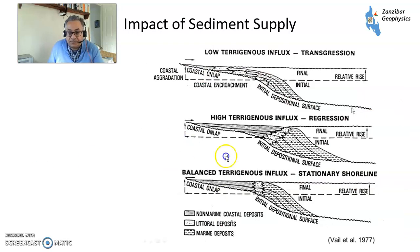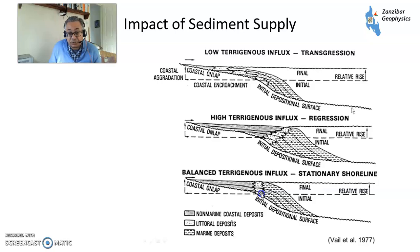When looking at transgression and regression — this is from Vail, one of the first people to look at sequence stratigraphy — you've got balanced terrigenous influx, where sediment supply is basically keeping up with the rise, so the shore is at a relatively static position geographically. You've got coastal deposits, littoral deposits where the beach sands are, and then marine deposits where the marine shales are. You may potentially have low stand turbidite fans out in the deep sea.